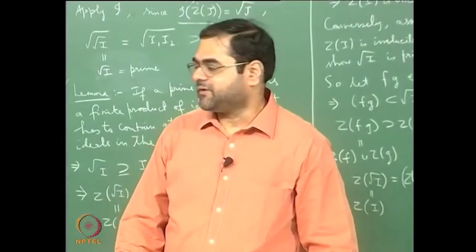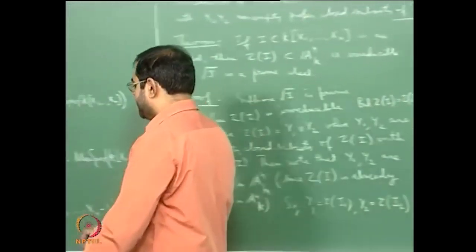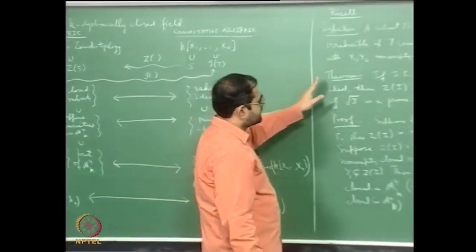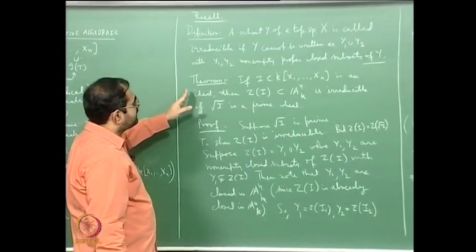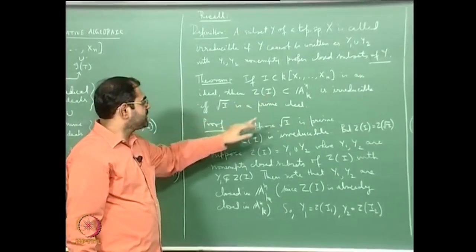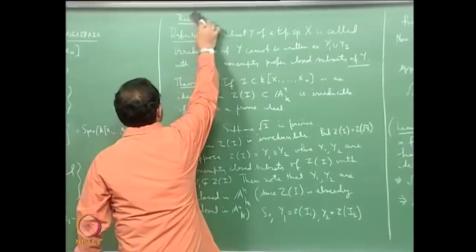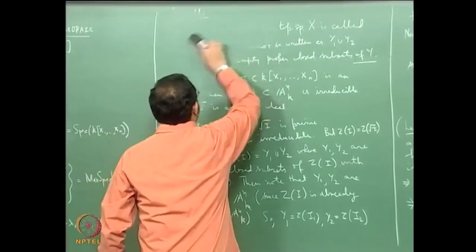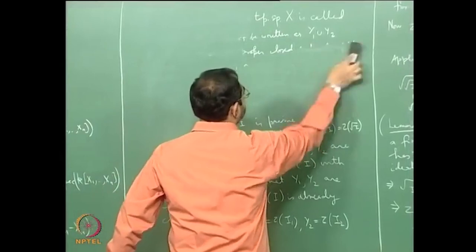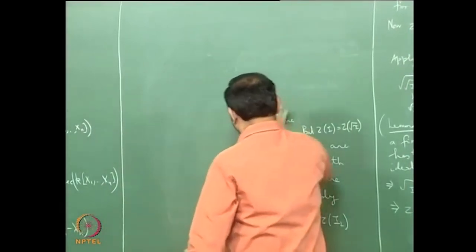Let us continue with our study of irreducible subsets of a fine space. We have just seen in the last lecture that the condition that the zero locus of an ideal is irreducible is that the radical of the ideal is a prime ideal. Let us look at some examples, including examples of what the Zariski topology looks like.